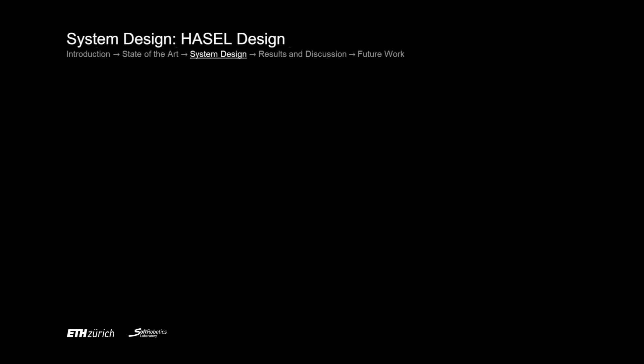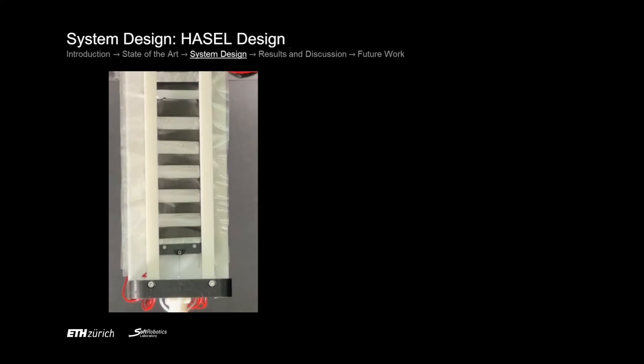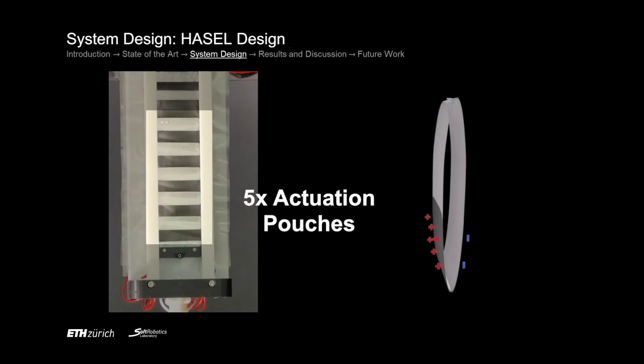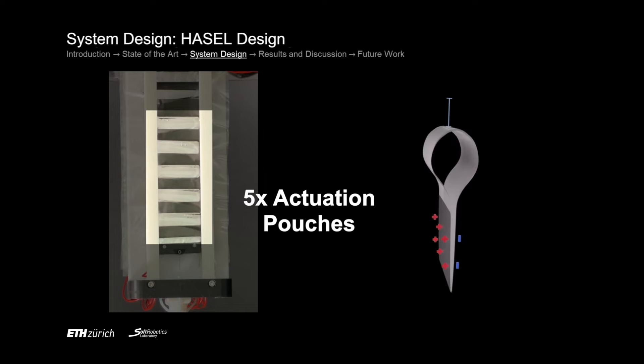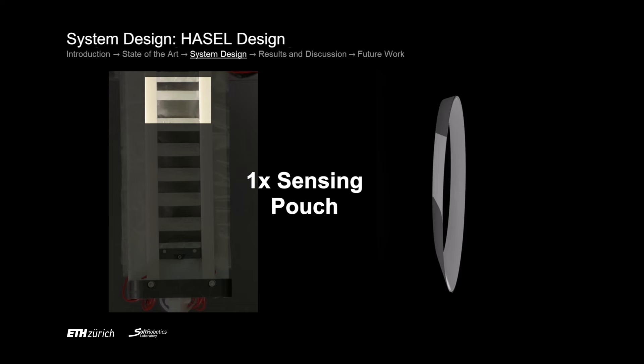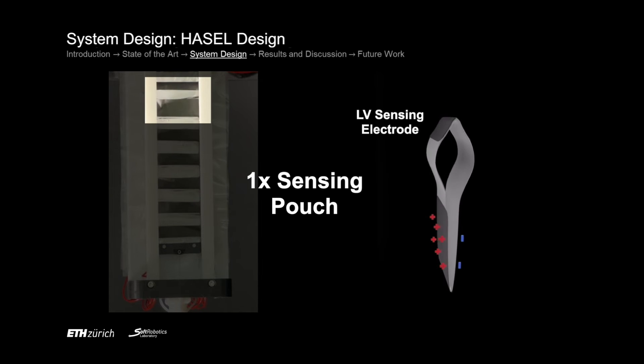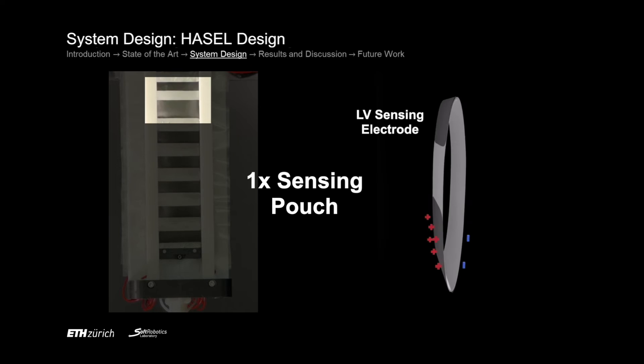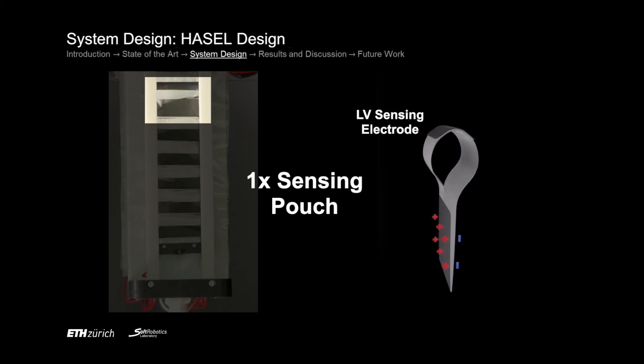Let's now continue with our actuator design. Our artificial muscles are composed of five actuation pouches which contract when a high voltage is applied. Traditional HASELs use the same electrode for sensing. However, in this paper we use a sixth pouch where we add two low voltage sensing electrodes on top to improve the self-sensing capabilities. We will follow up with a further study that will dive deeper into the advantages of this design.